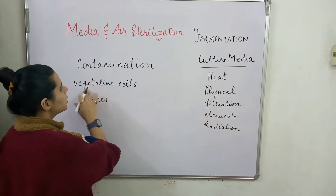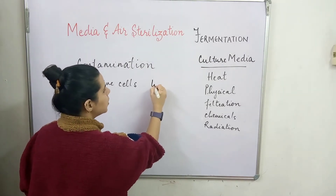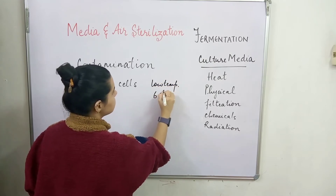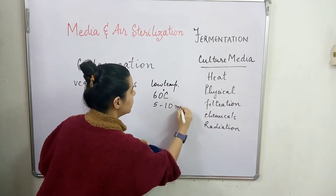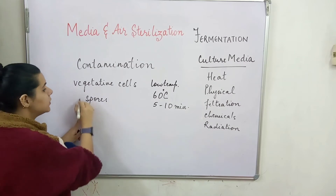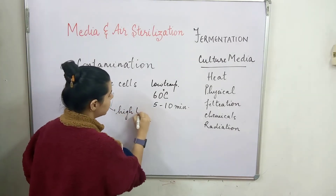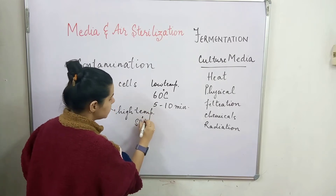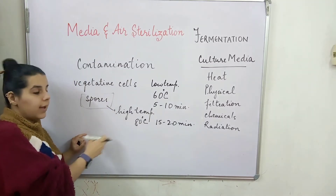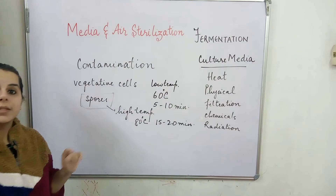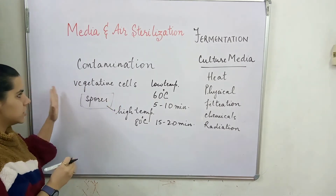To destroy vegetative cells, we can sterilize them at a lower temperature — around 60 degrees Celsius — for a shorter duration of 5 to 10 minutes. But in the case of spores, because they are quite resistant and sturdy, we need to subject them to a higher temperature of more than 80 degrees Celsius for 15 to 20 minutes. Both the temperature and duration are higher for spores.